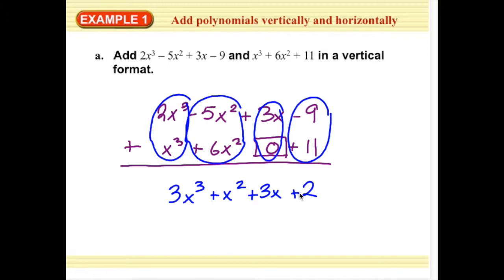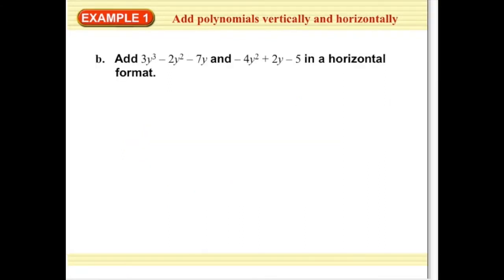The next thing I'm going to do is one more example for adding. This asks me to do it in a horizontal format. This is completely up to you which method you want to use. Again, I could just say 3y cubed minus 2y squared minus 7y and negative 4y squared plus 2y minus 5. And I'm just going to go through and combine. So I have a 3y cubed, but there's no other cubed term, so I'm just going to say 3y cubed.